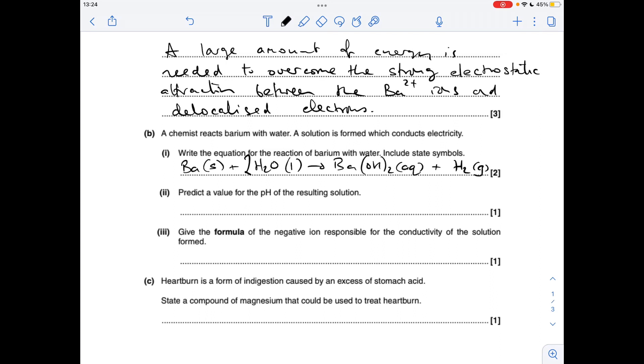The pH just needs to be anything between 8 and 14. Because barium's fairly close to the bottom of group 2, I'm going to go for 12. The formula of the negative ion responsible for the conductivity of the solution is the hydroxide ion, OH-.